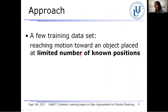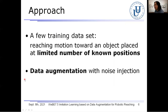Therefore, in our approach, the robot is instructed to reach the hand toward an object placed at a limited number of known positions. Using a few training datasets, the robot plans the reaching motions toward an object placed at not only known positions but also unknown positions. For this purpose, data augmentation with noise injection is applied to the training dataset.